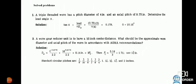Solved problem based on Lewis and Buckingham equation: A triple threaded worm has pitch diameter 4 inches and axial pitch = 0.75. Determine the lead angle. Solution: tan α = d / (π d_W) = (0.75 × 3) / (4 × π) = 0.179, α = 10.16 degrees.